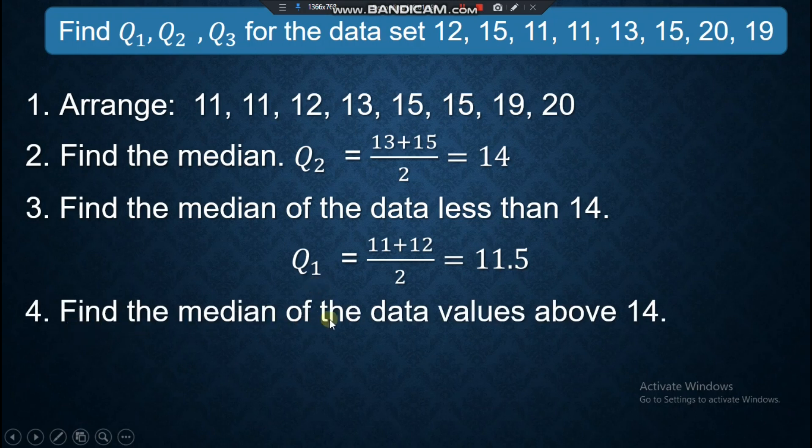Next is find the median of the data values above 14. We're done with below 14 or less than 14. Let's have greater than 14 or above 14. What are the data that are above 14? 15, 15, 19, and 20. Find the median. We have 15 and 19. You divide that by 2. You will have 17 is our Q3. So we're done with Q2, Q1, and Q3.